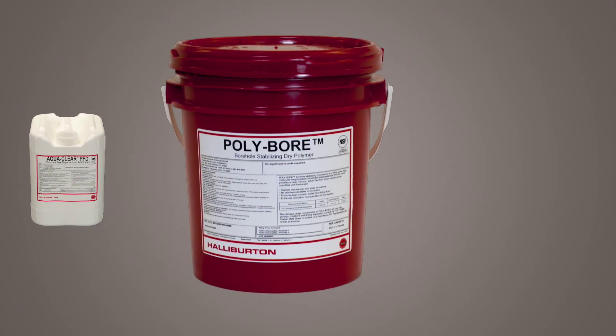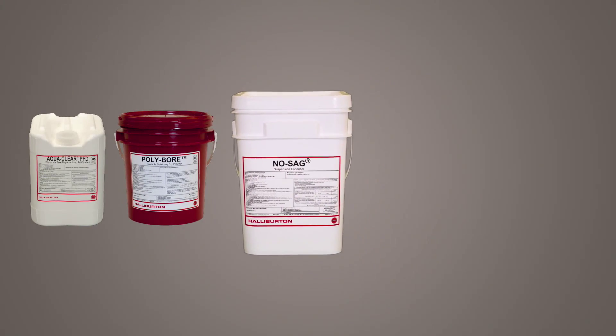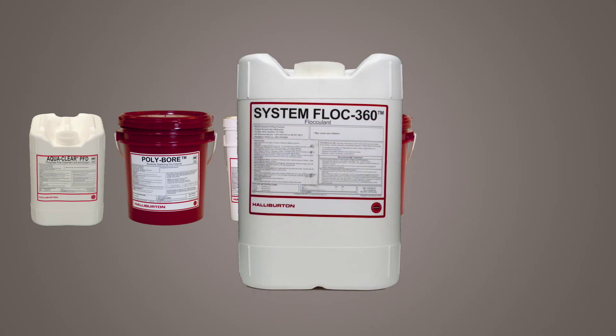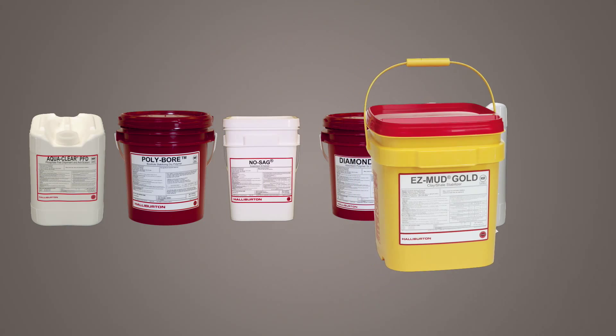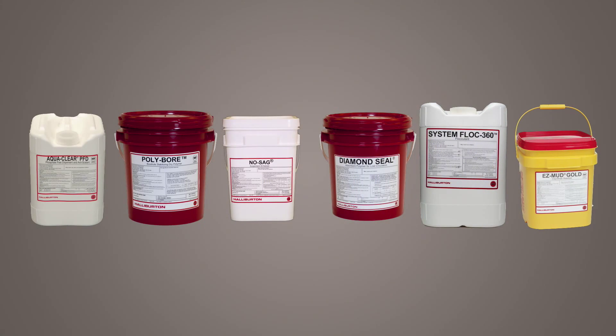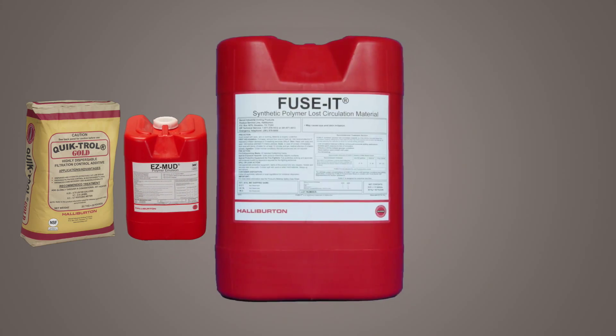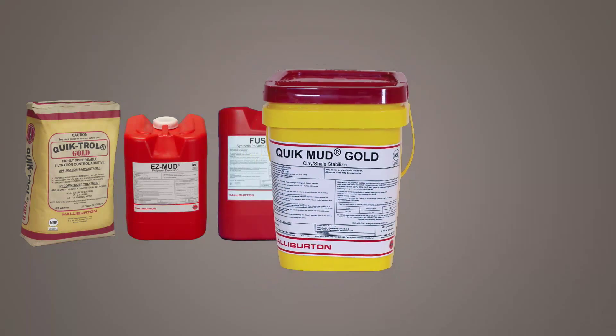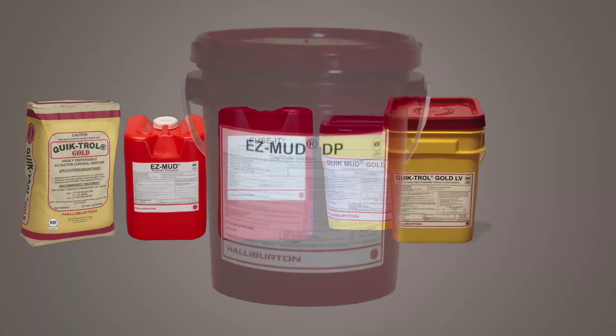We have polymers for dispersing, viscosifying, suspension enhancers, lost circulation, flocculation and solids disposal, clay and shale inhibitors, and filtration control. These are just some of the fluid properties we can get from adding polymers to our fluid system and can help you get the job done right the first time.